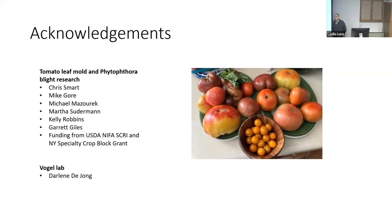Within the tomato leaf mold pathogen, you said there are two different races — is there much genetic diversity within a race or between races? Yes. There was quite a bit of genetic variation. We found evidence for both sexual and asexual reproduction, and it didn't seem like that genetic variation was necessarily partitioned by race, which kind of makes sense given that these race nomenclatures are governed by maybe a single gene.